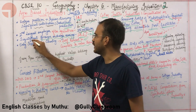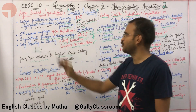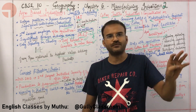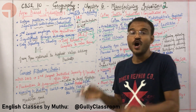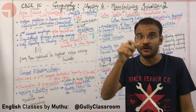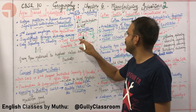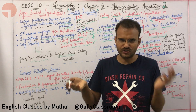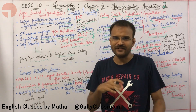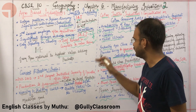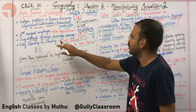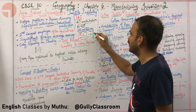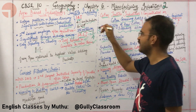The next point: textile industries are contributing significantly to foreign exchange earnings — almost one quarter, which is 1 by 4. The exact figure is 24.6%. How to remember it? All even numbers: 2, 4, 6 — so 24.6%. Textile industries contribute 24.6% to India's foreign exchange earnings.